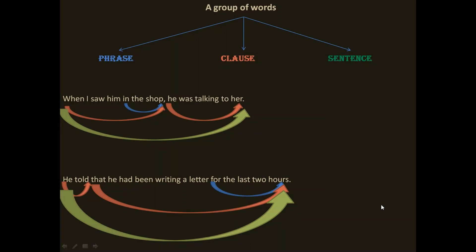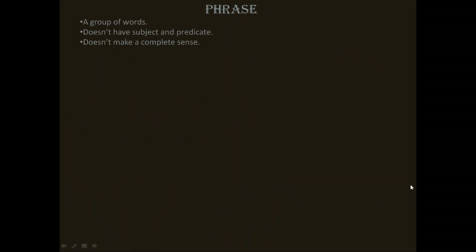Now we will know about the phrase, clause and sentence further. A phrase, as we have already read, is a group of words. It doesn't have a subject and predicate, and it doesn't make complete sense — though it makes some sense, but not a complete one.